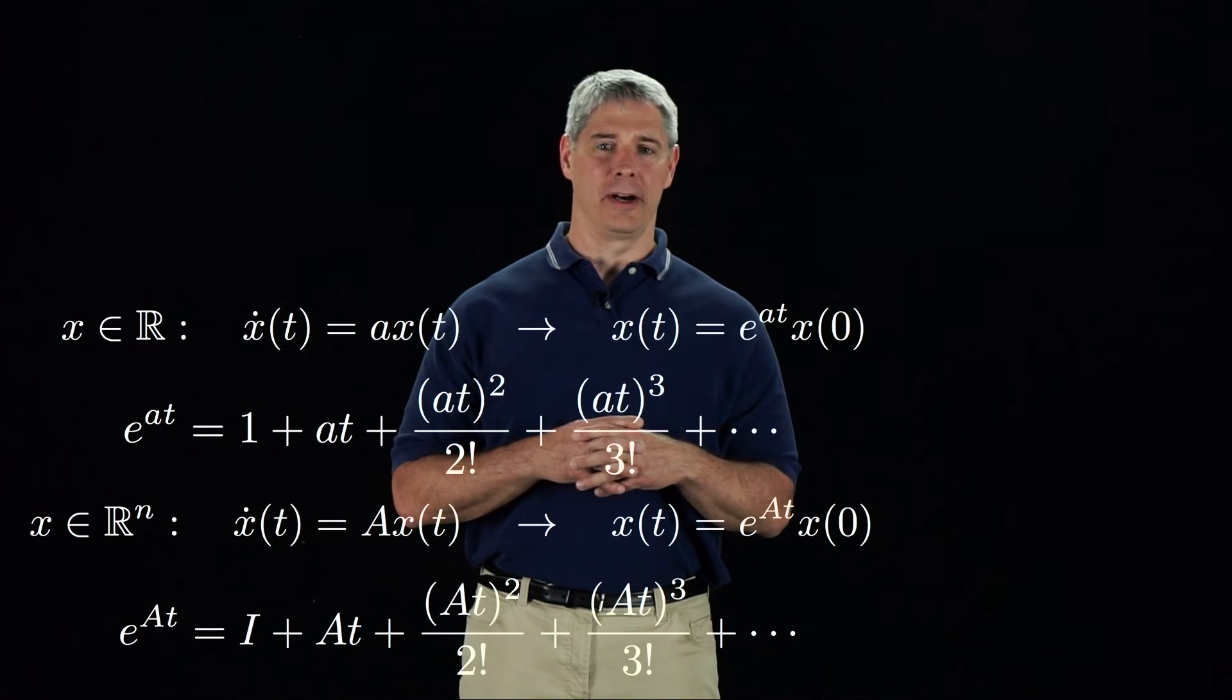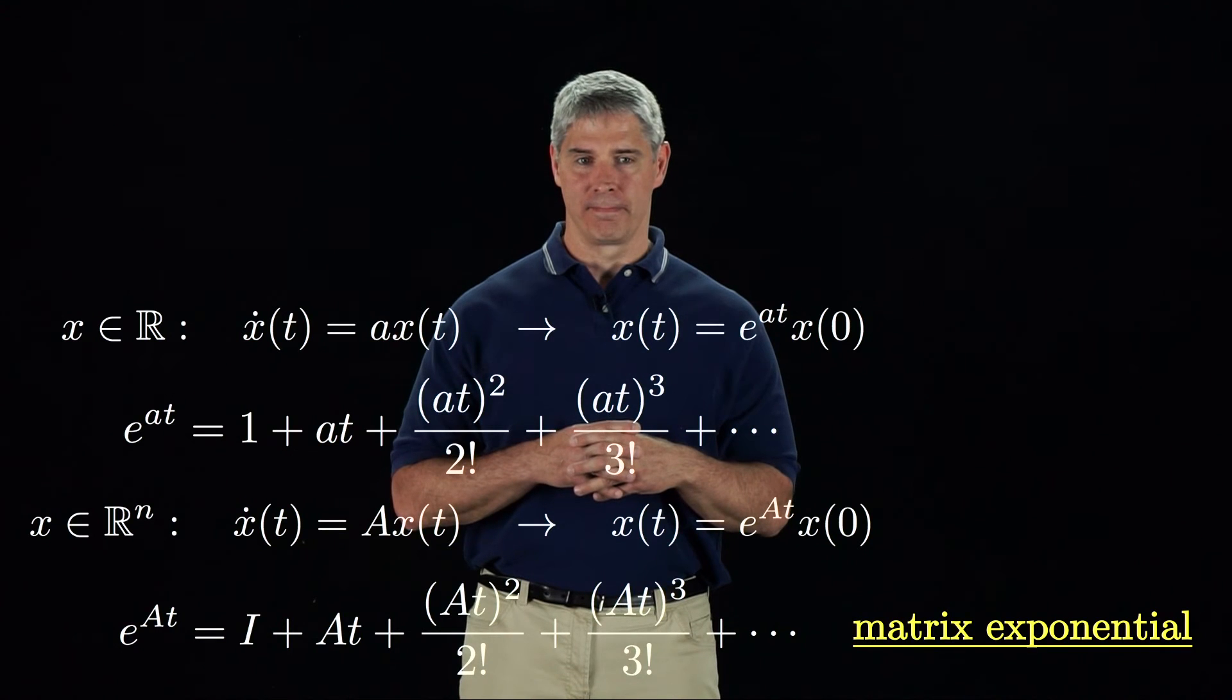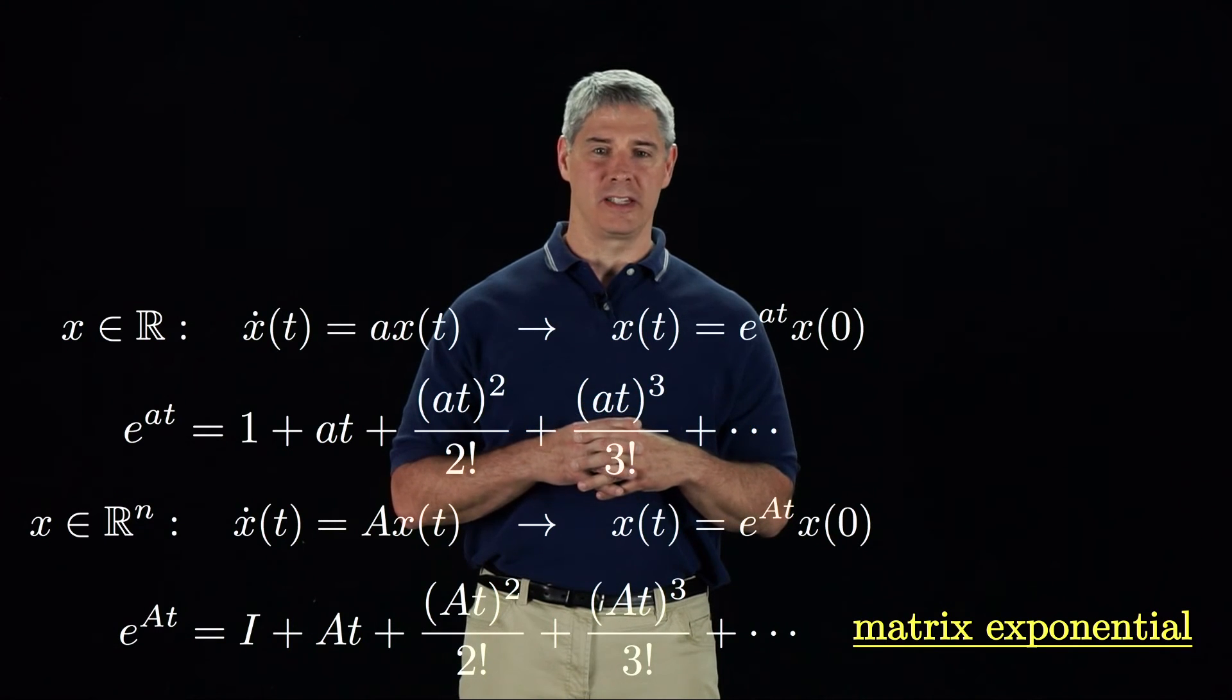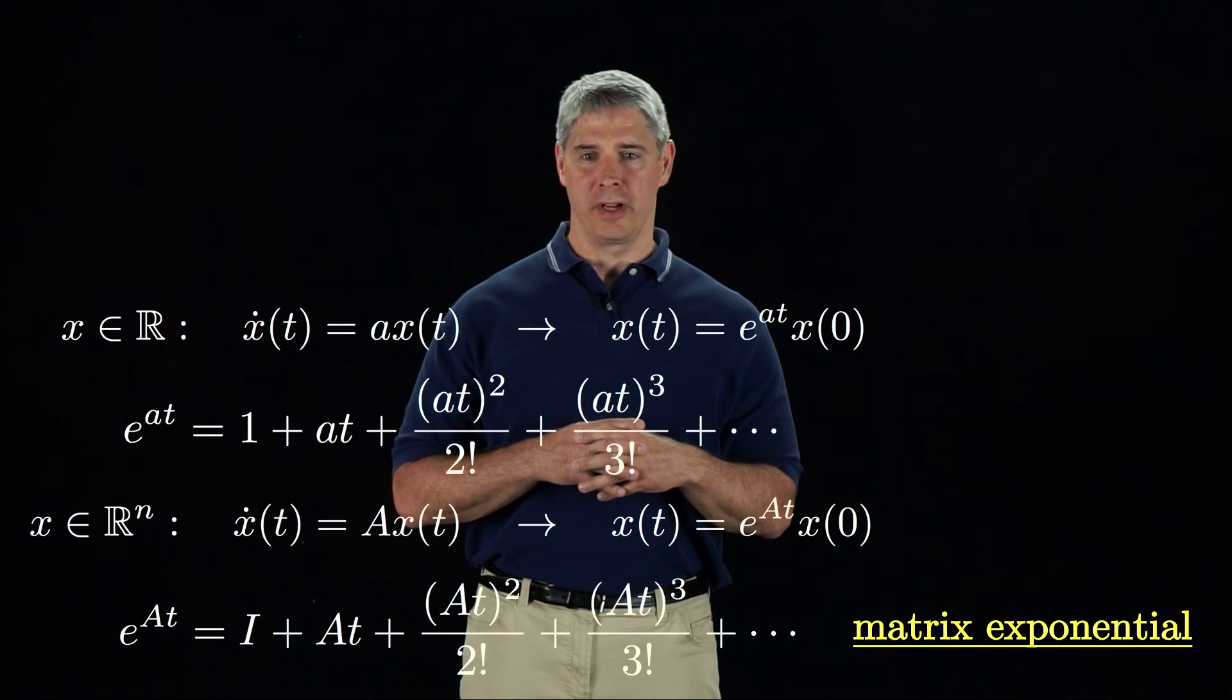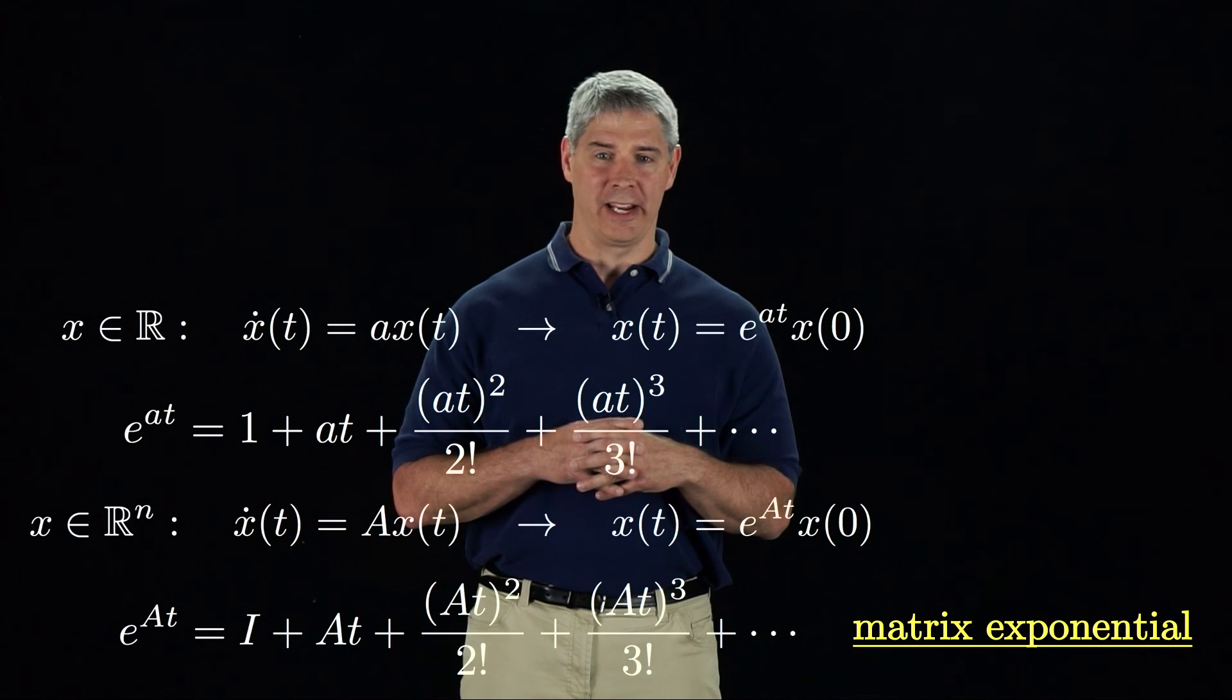The term e to the at is called a matrix exponential. As we'll see in the next video, this equation can be used to integrate an angular velocity, where the matrix A is the 3 by 3 skew symmetric representation of the angular velocity.